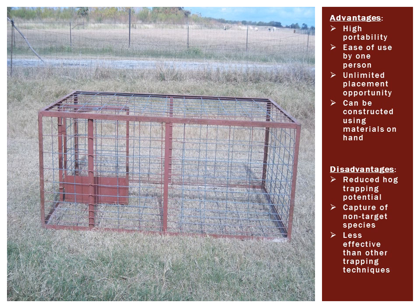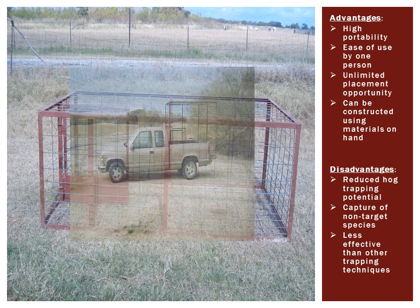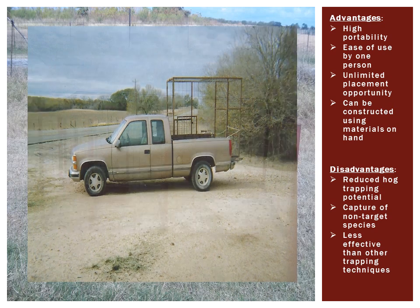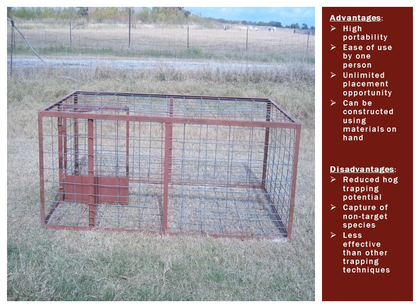Box traps offer several great features that make them useful in feral hog management. They are easily moved and operated by one individual and can be placed virtually anywhere. The traditional box trap is typically four feet wide by eight feet long with a 24 to 36 inch entrance.